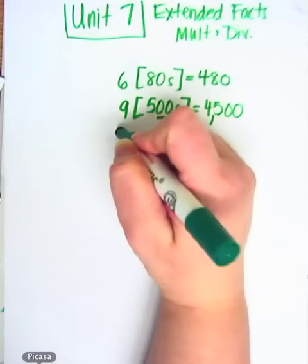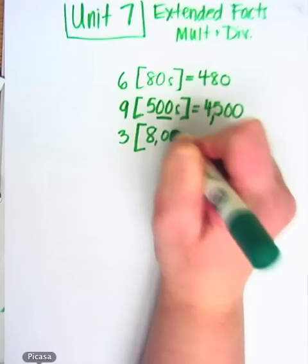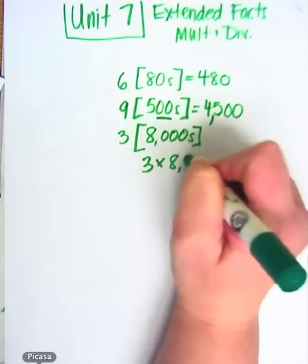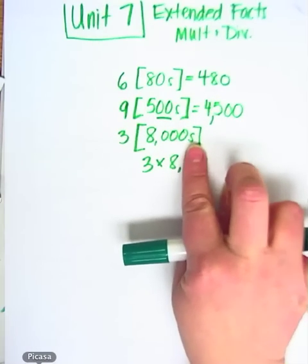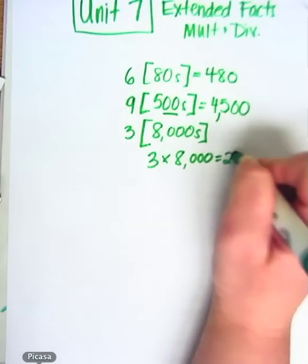Let's do one more. Three eight thousands. Well, that's actually three times eight thousand. And we're going to go ahead and cover all the zeros so that we just see our simple fact. And our simple fact is three times eight. Three times eight, I know, is twenty-four.